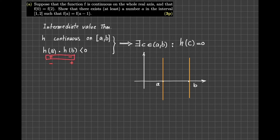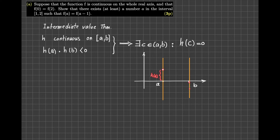Let us concentrate on the case where h of a is positive but h of b is negative. The value of the function at a is positive, so h of a is above the x-axis. But h of b is negative, meaning h of b is below the x-axis. So this is the starting point above the axis, and that is the ending point below the axis.